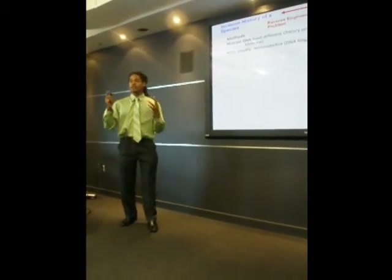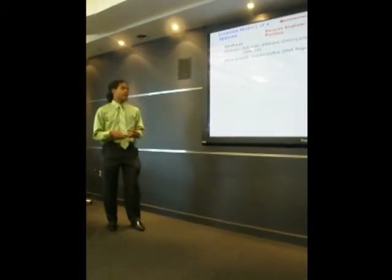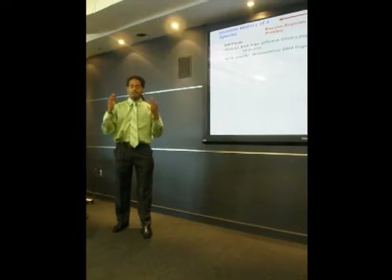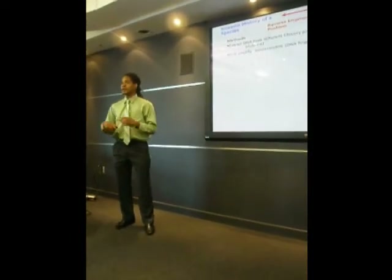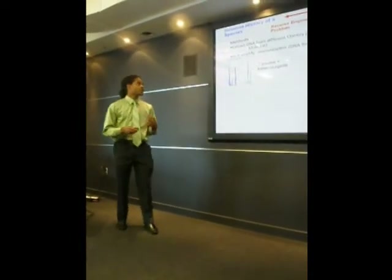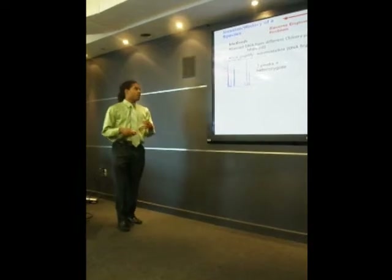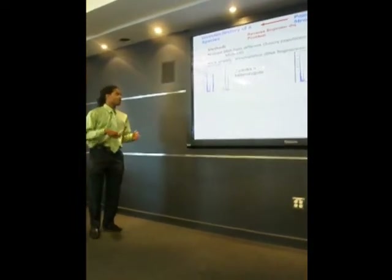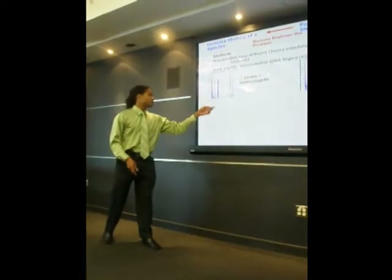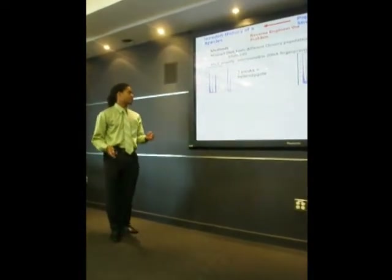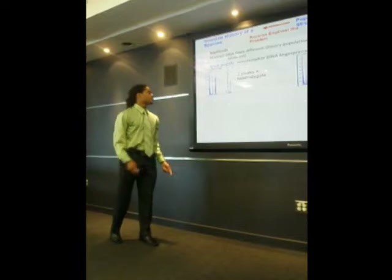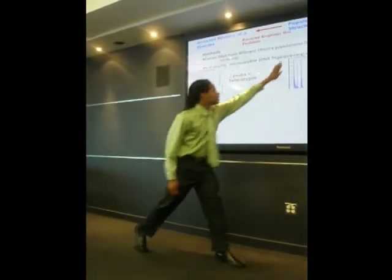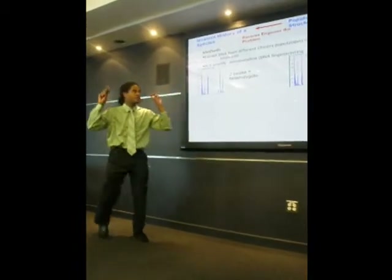Microsatellites are simple sequence repeats in the region of DNA. After PCR, we did gel electrophoresis to verify the PCR was successful, followed by fragment analysis, which allows us to score results in a software called Peak Scanner. In Peak Scanner, the x-axis represents the size of microsatellites in base pairs, and the y-axis represents the amount of product amplified during PCR. Anything less than 130 base pairs we ignore — we call that noise.